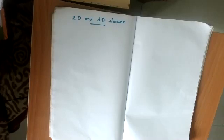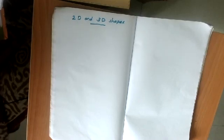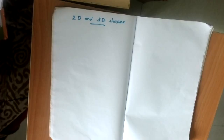There are two different types of shapes: two-dimensional shapes and three-dimensional shapes. We can see different types of materials and things around us, all different in their shapes. Some are circular, some are oval, some are square, rectangle, and so on.